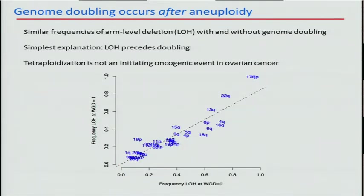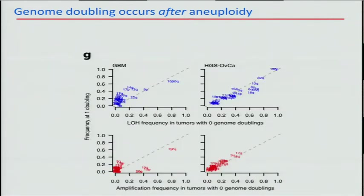Speaking to which happens first: if you look at patterns of LOH in ovarian cancer by chromosome arm, for a given arm the frequency of LOH in doubled samples and in non-doubled samples is nearly identical. This is reasonably good evidence that chromosome arm-level aneuploidies tend to occur early on in ovarian cancer — specifically these LOH events and also amplification events. This is a general feature of many human cancers that show this pattern.